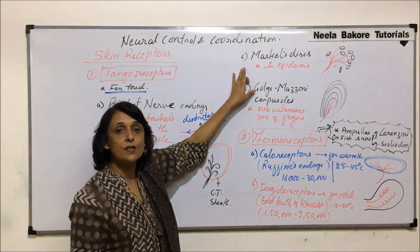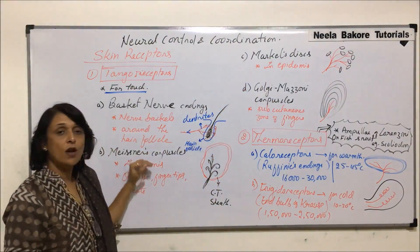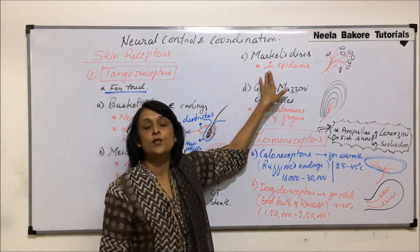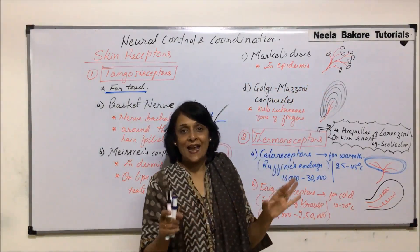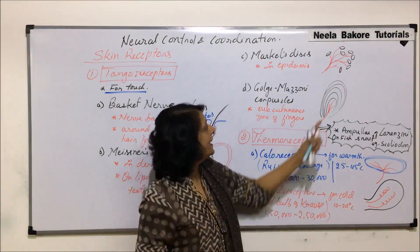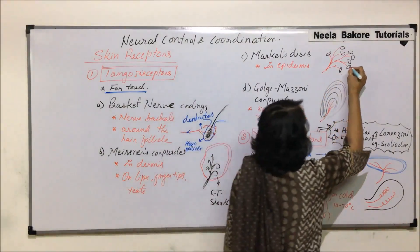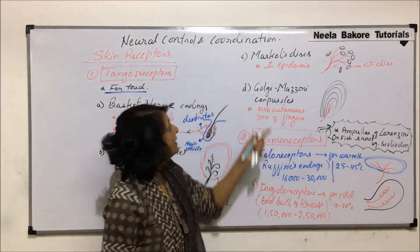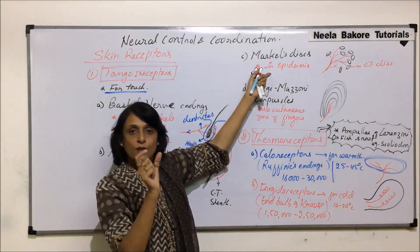They are responsible for perception of touch. The third tangoreceptors are known as Merkel's discs. These are in the epidermis, whereas Meissner's corpuscles are a little deeper in the dermis. In case of Merkel's discs, the dendrites have branched and at the tip of each ending there is a disc-like structure. These discs are made up of connective tissue, so as the name tells us, the ending of the nerve has a disc.